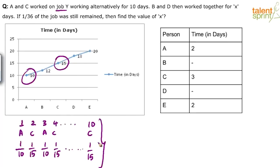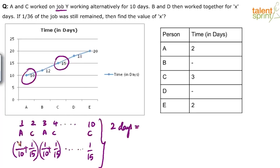In two days of time, how much of the job gets done? We can finish 1/10 plus 1/15, because the cycle is for two days — every two days the same amount of work gets done. 1/10 plus 1/15: the LCM is 30, so that's 3 plus 2 = 5/30 = 1/6. In two days, 1/6 of the job gets done. Every two days, 1/6 of the work is completed.